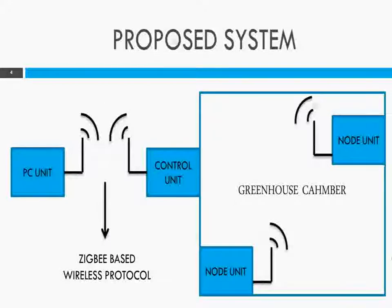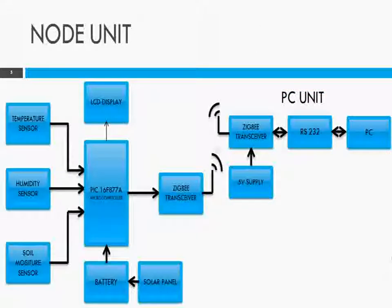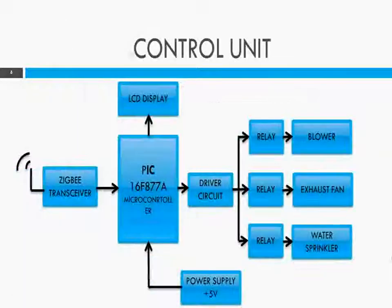Here is the overall block diagram. It consists of three units: a node unit to collect data from the field, a PC unit to receive data from the node at a remote location, and a control unit that controls the actuators based on instructions given by LabVIEW.